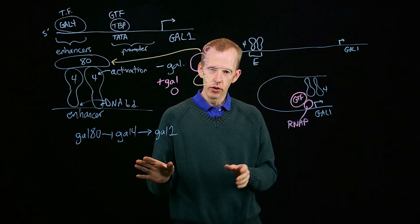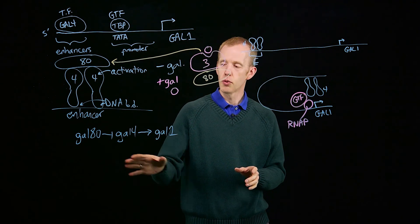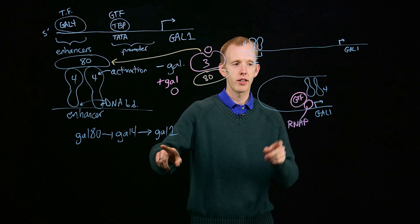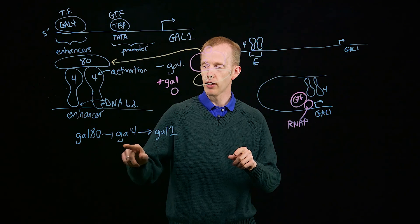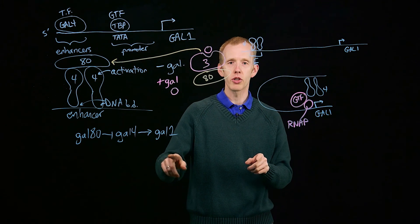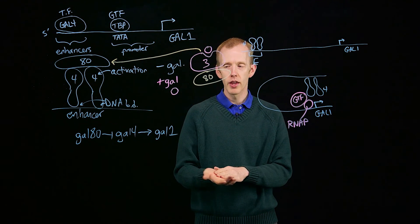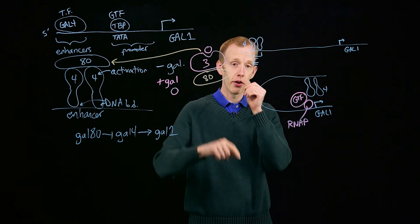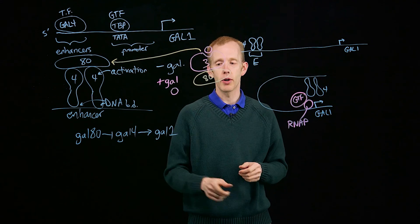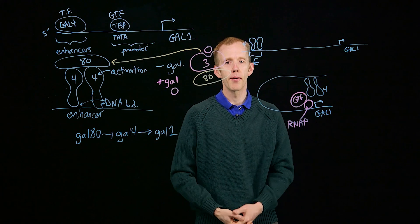What I'd like you to do for next class is to finish, to add these interactions of GAL3 to this pathway of GAL80, GAL4, and GAL1. Make sure you use the appropriate symbol, an arrowhead or a blunt arrowhead, to represent how galactose and GAL3 interact with this pathway to regulate the expression of GAL1.